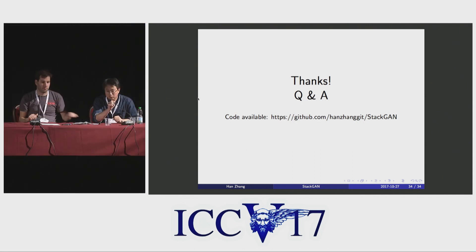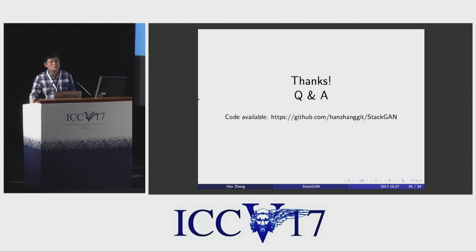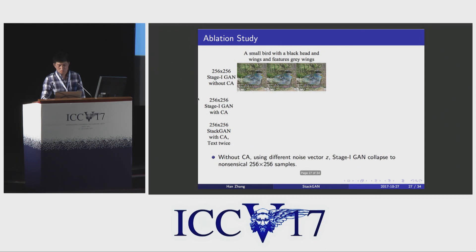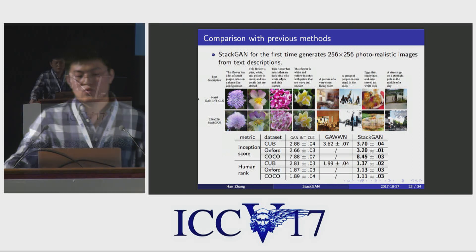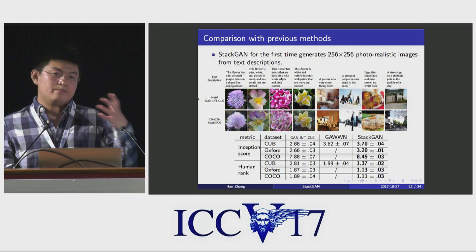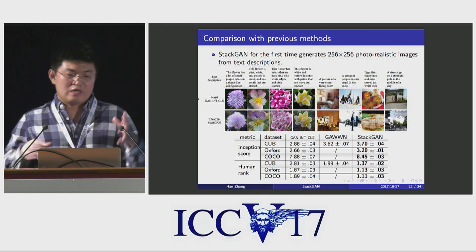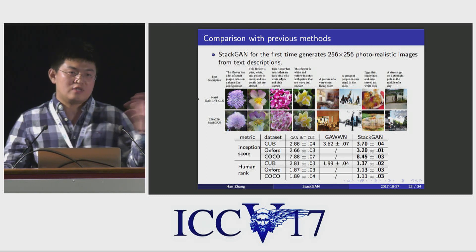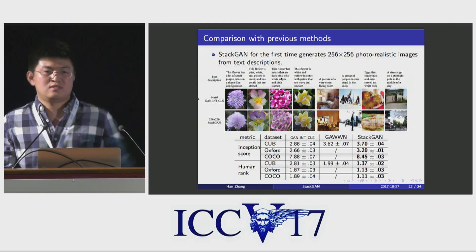We have time for one or two questions. Question: I have a quick question regarding the evaluation. You use inception score and human ranking, but shouldn't you measure whether the generated image actually captures the content of the text description? Answer: That's a good question. The original inception score basically evaluates image quality, so that's why we also conduct human evaluation. For human evaluation, it assesses first whether it is a realistic image, and second whether the generated image is conditioned on the text.